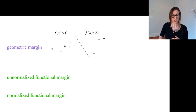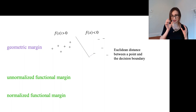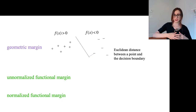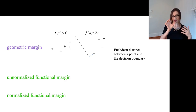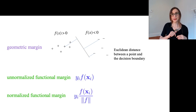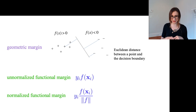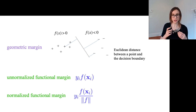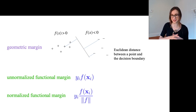The geometric margin is the Euclidean distance between a point and the decision boundary — think about the points being distributed in real space and actually calculating these distances between the point and the line. The unnormalized functional margin is Y times F, and the normalized functional margin is Y times the normalized version of F. As we're going to show, the normalized functional margin and the geometric margin are actually the same thing, depending on our choices.